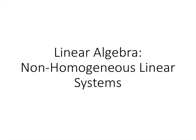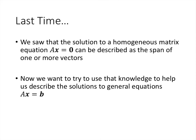In this lecture we'll talk about solutions to non-homogeneous linear systems. In the previous lecture we discussed homogeneous systems of equations, which can be written in matrix form as Ax equals 0. We learned that the solutions can be described as the span of one or more vectors. Now we want to connect this to the more general question of how to describe solutions to equations like Ax equals b, where b might not be the zero vector.